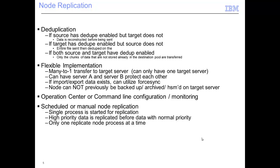If deduplication is set up on the source server and you're replicating data out of that dedupe pool to the target server, if the target server does not have dedupe set up or you are not replicating to a dedupe pool, the source server will reconstitute the data prior to sending it over. If the source server is not using dedupe but you're replicating to a dedupe pool on the target server, then the data will be deduped once it arrives at the target. If both the source and target servers are using dedupe and you're replicating from one dedupe pool to another, then only the chunks of data not already on the target server will be replicated across the network.